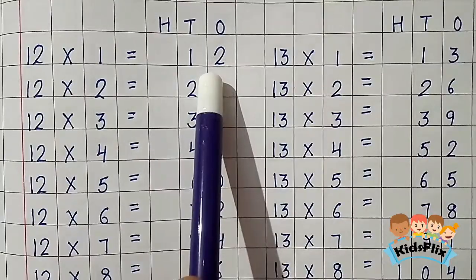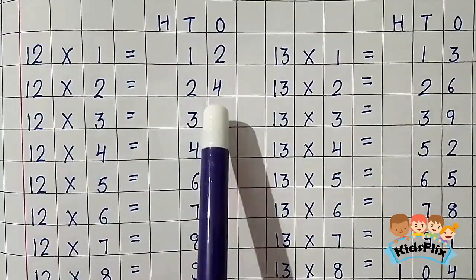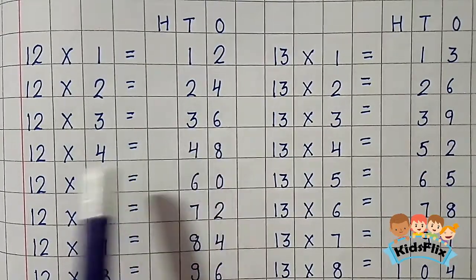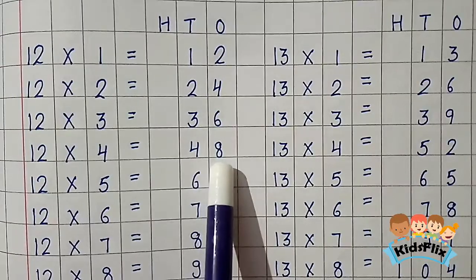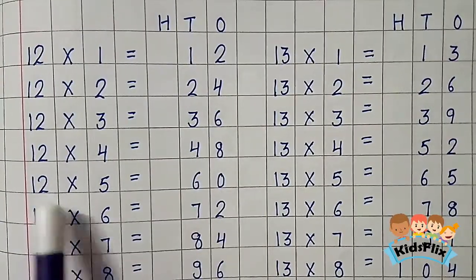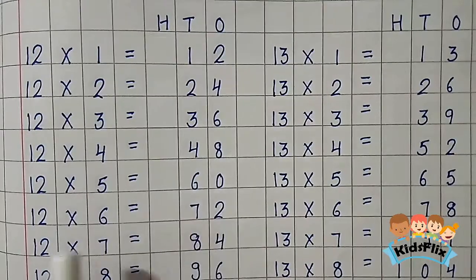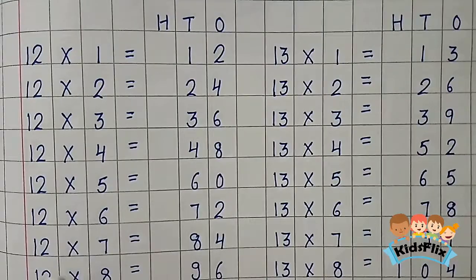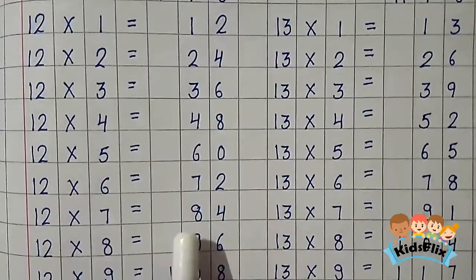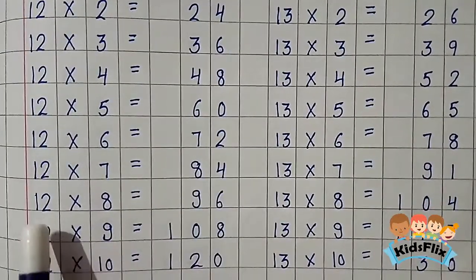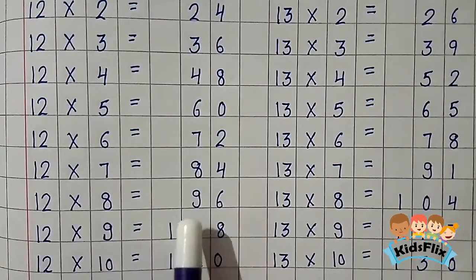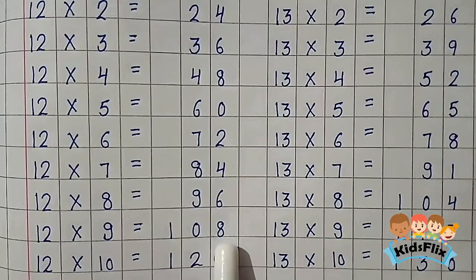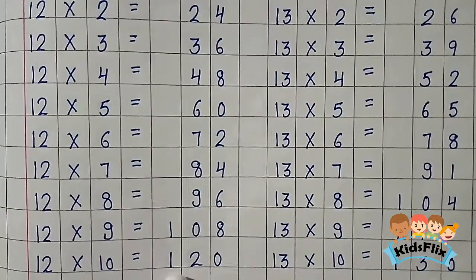12 1s are 12. 12 2s are 24. 12 3s are 36. 12 4s are 48. 12 5s are 60. 12 6s are 72. 12 7s are 84. 12 8s are 96. 12 9s are 108. 12 10s are 120.